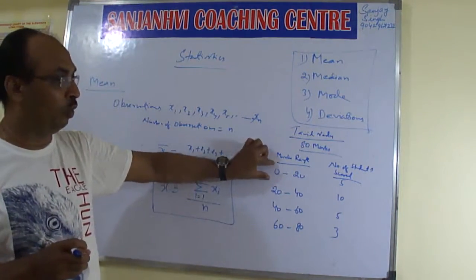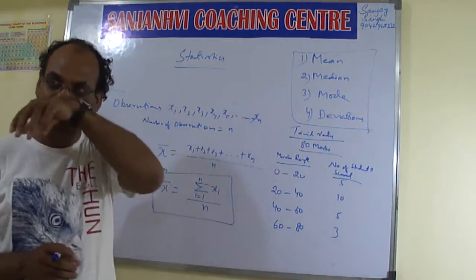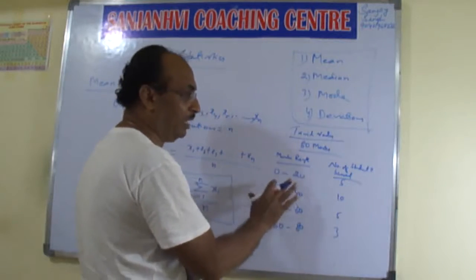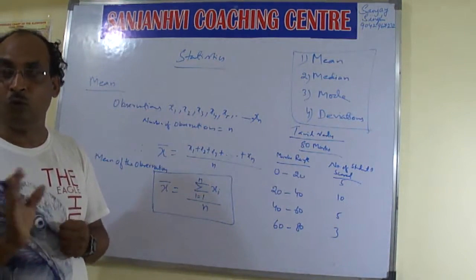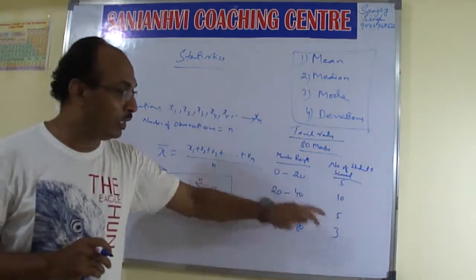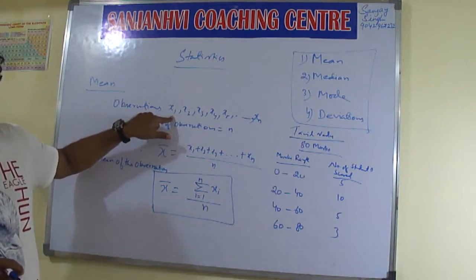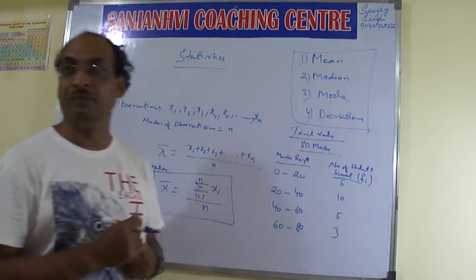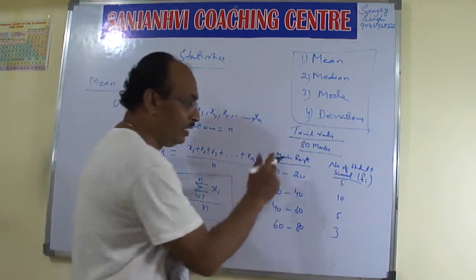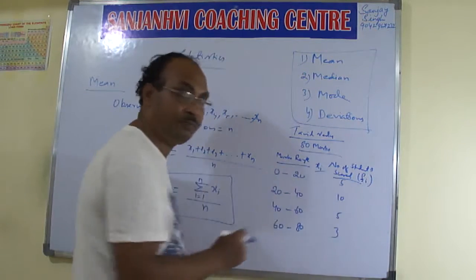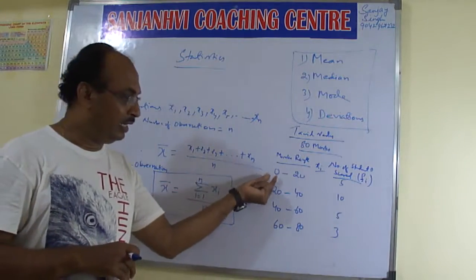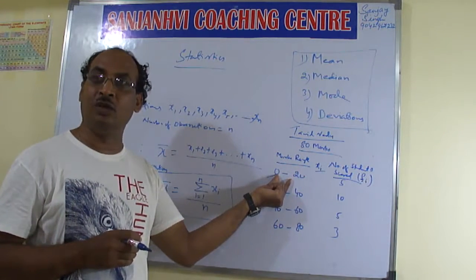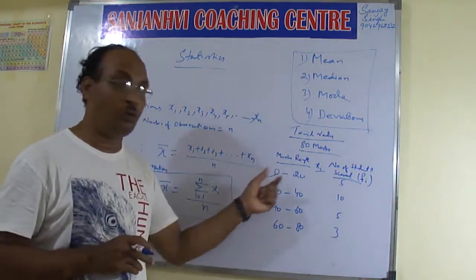So how will we find mean for grouped data? This frequency column will be denoted by Fi — Fi means frequency, meaning this many people. And from the class interval you have to create Xi. This first value is called lower class mark, this is called upper class mark, and the interval is called a class. 0 to 20 is a class, 20 to 40 is a class.